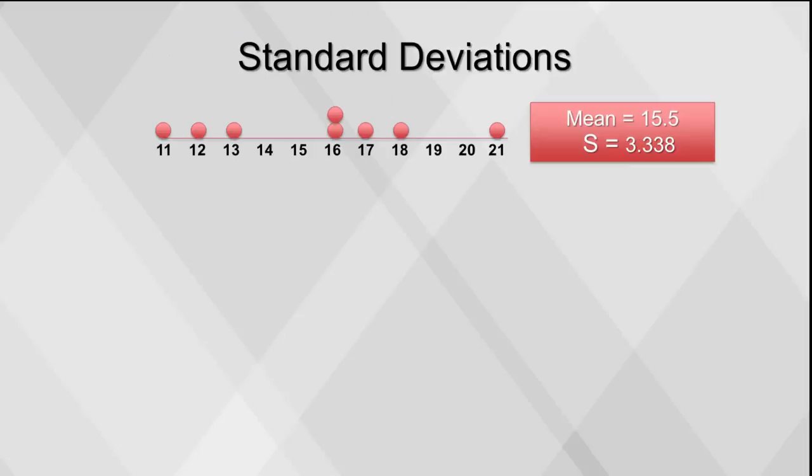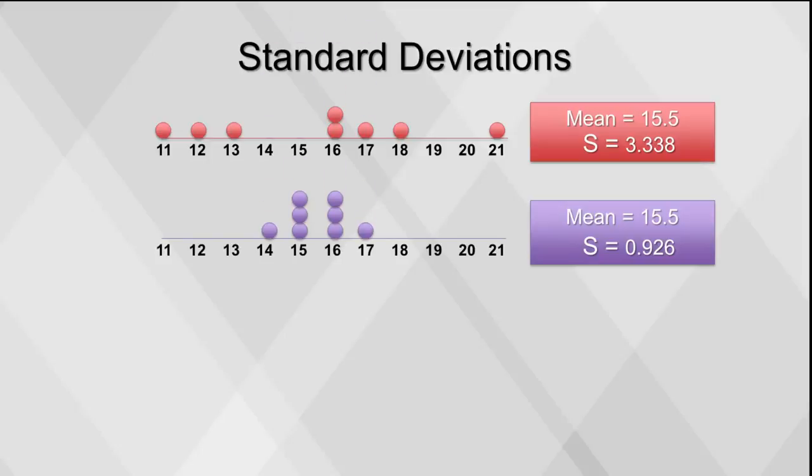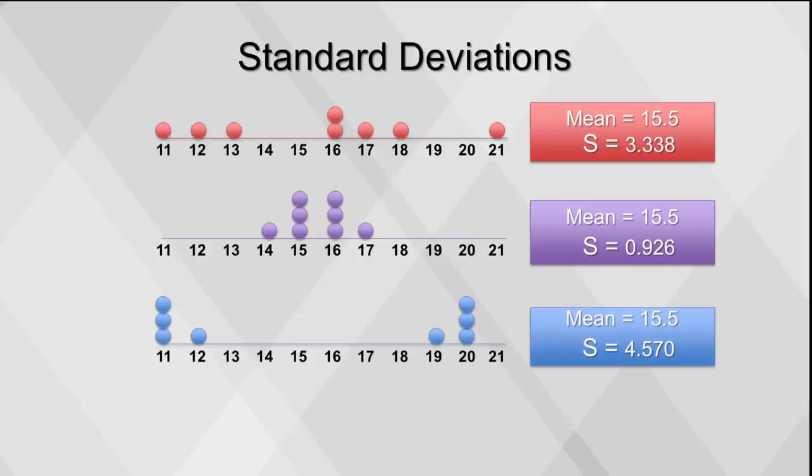Here in red is an example of a moderate standard deviation. You can see that the data is spread pretty evenly. The purple shows a low standard deviation, in which the data is concentrated near the distance. The blue example shows a high standard deviation, where the data is concentrated on the outside.